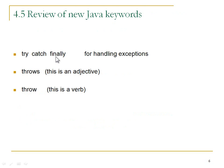So we've done try, catch, and finally. We've done the throws clause, which is always on a method signature. A throws describes something that a method might do - never what a class might do, since classes have nothing to do with flow of control. Only method calls do.